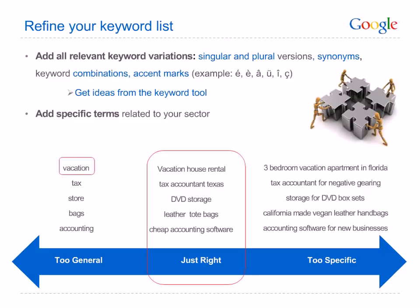It's very important to refine your keyword list to improve quality — the more complete it is, the higher your quality score will be. This will have a positive impact on your minimum bids. Refining means you should make sure you've included all variations of your keywords: singulars and plurals, synonyms, keyword combinations, and diacritics or accents which change the pronunciations of words. Having all variations in your keyword list means you're more likely to match precisely what the user typed, making it more relevant. Remember, the keyword tool can help to refine your list extensively.